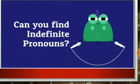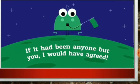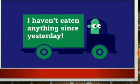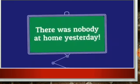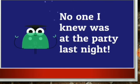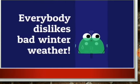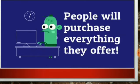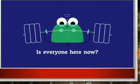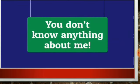Examples: 'Has anybody ever told you that you are very smart?' — anybody. 'If it had been anyone but you, I would have agreed.' — anyone. 'I haven't eaten anything since yesterday.' — anything. 'There was nobody at home yesterday.' — nobody. 'No one I knew was at the party last night.' — no one. 'They did nothing about that problem.' — nothing. 'Everybody dislikes bad winter weather.' — everybody. 'People will purchase everything they offer.' — everything. 'Is everyone here now?' — everyone. 'Anybody can prepare scrambled eggs.' — anybody. 'Anyone can see you are happy.' — anyone. 'You don't know anything about me.' — anything.